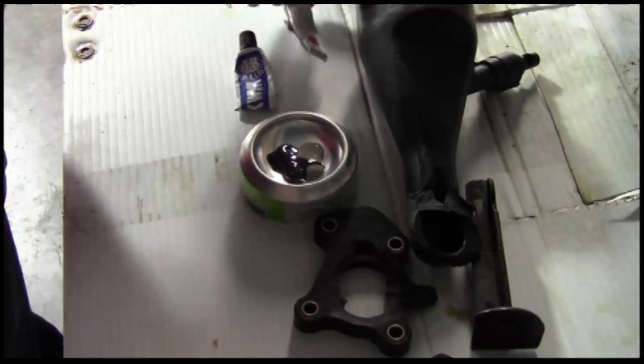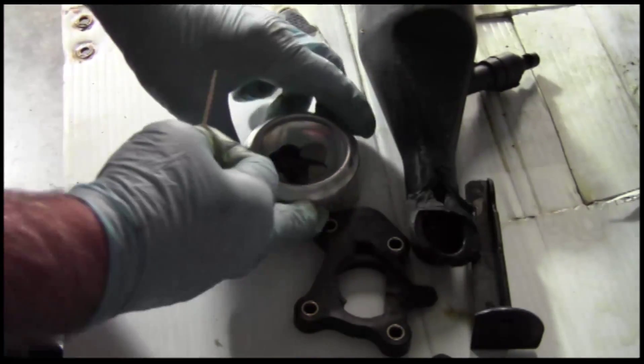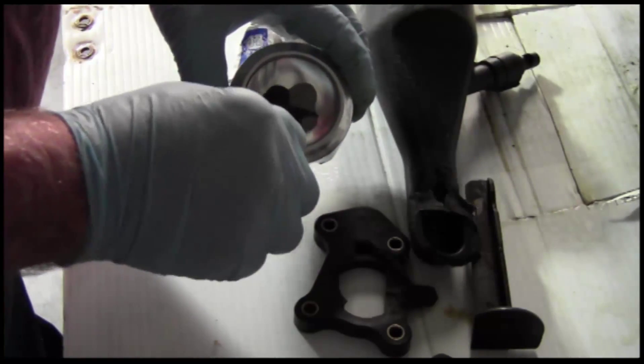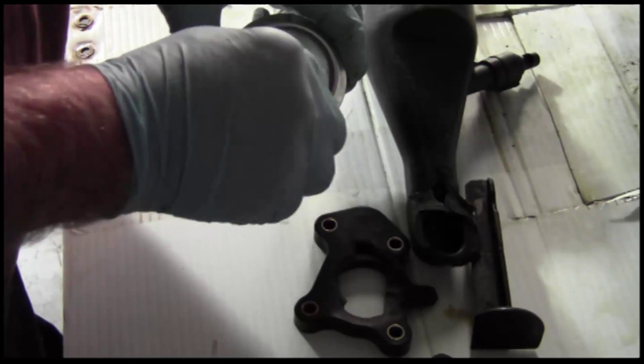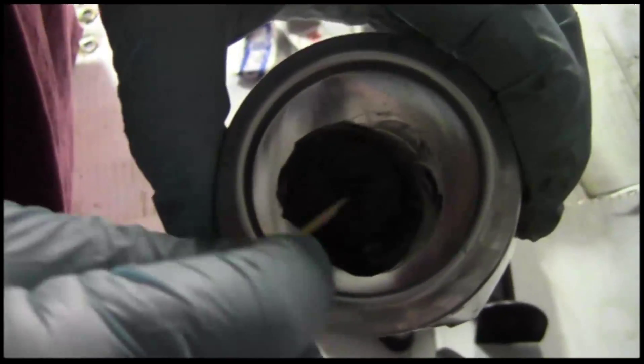JB Weld comes in two components: hardener and steel. You want to mix these as close to 50-50 as you can. You mix until you get a very, very dark gray consistency.